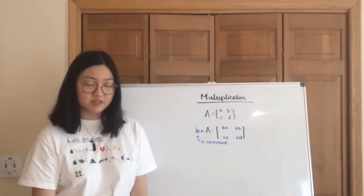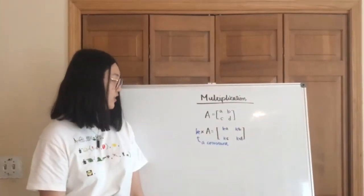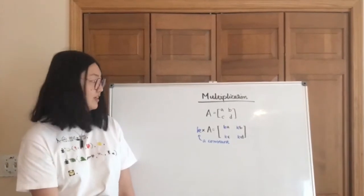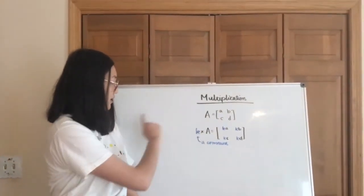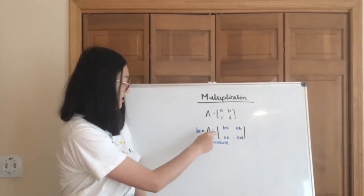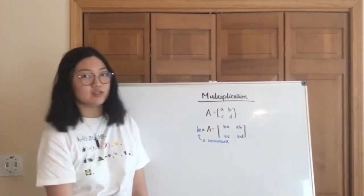There are in general two types of multiplication that matrices can do. The first kind is very easy. It's just multiplying by a constant or a number. So if you have a matrix and you have a constant, you just basically multiply the constant by each member or number in the matrix.